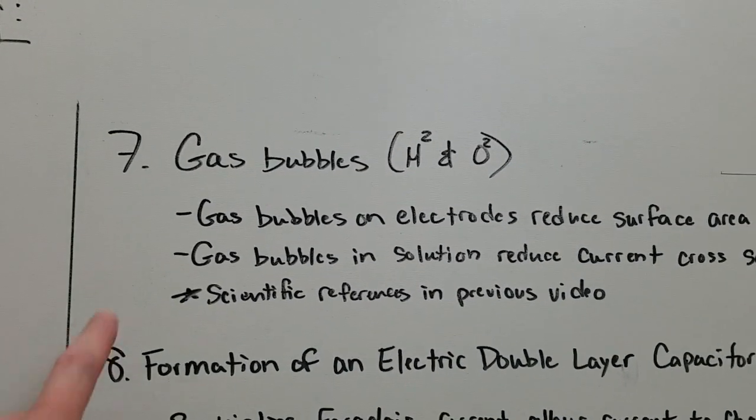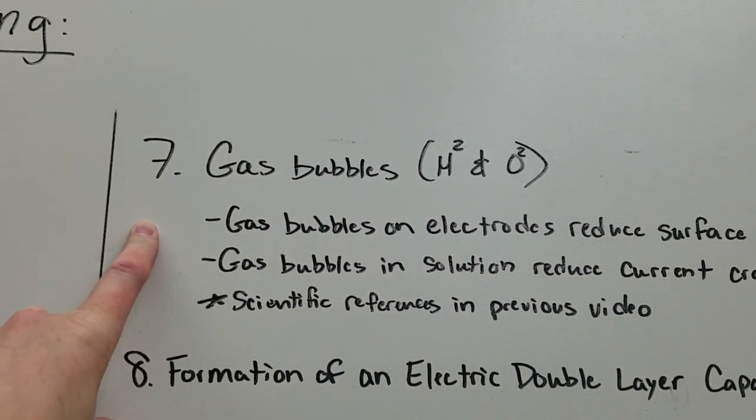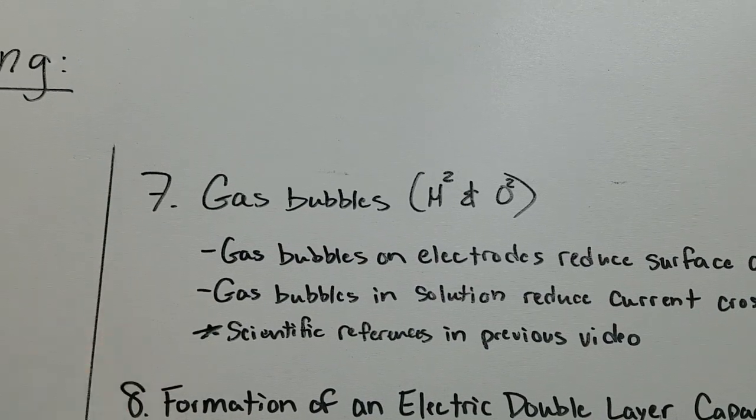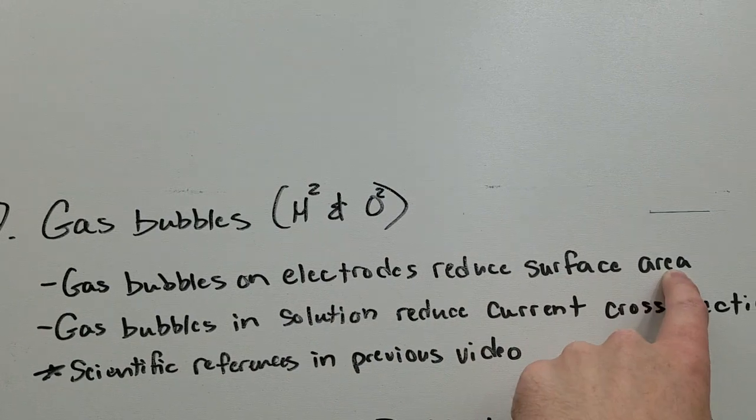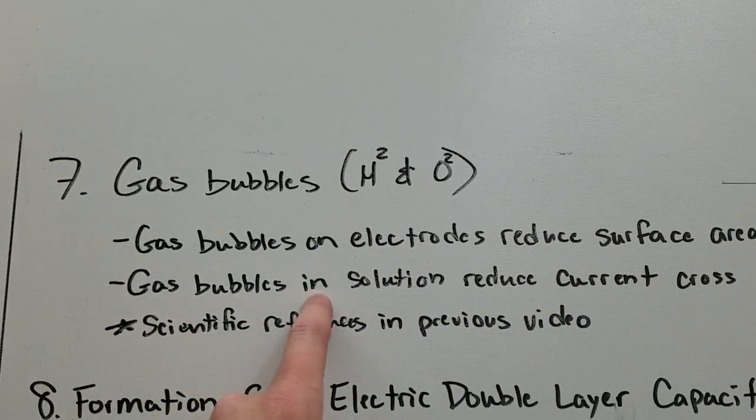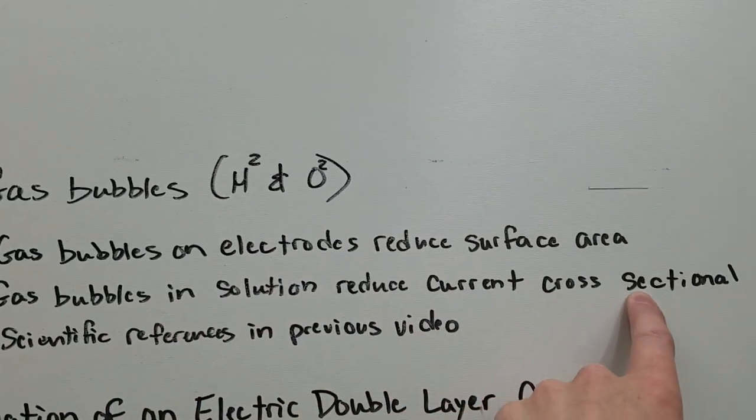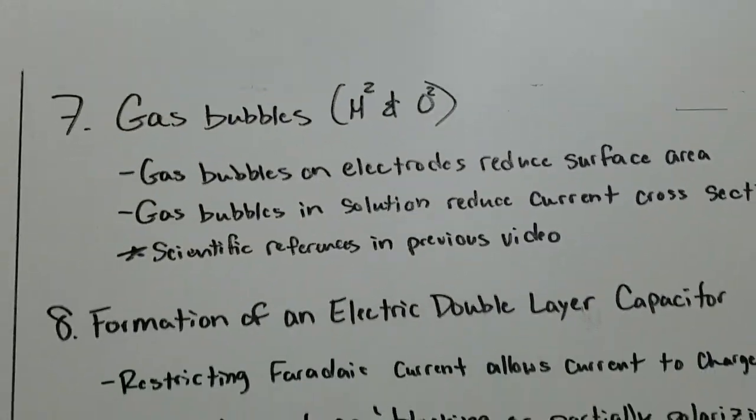Now number seven, gas bubbles. In my previous video, I explained and gave references in scientific papers that stated gas bubbles on electrodes reduce the surface area and gas bubbles in the solution reduce the current cross-sectional area.